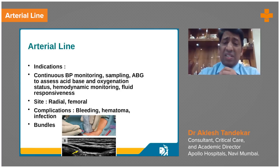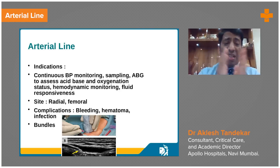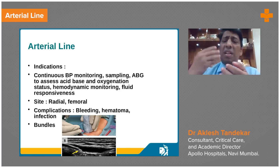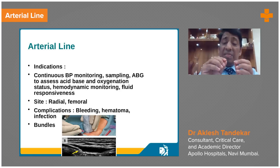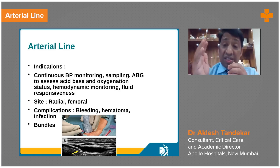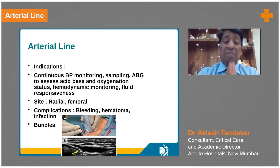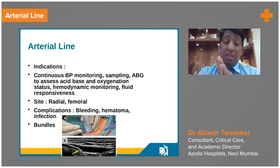The basic advantage of putting an arterial line is to have continuous BP monitoring. The arterial line not only gives you assessment of blood pressure but also helps with frequent sampling — ABG sampling — which will help guide oxygenation and ventilator parameters. TCO2, PO2, and acid-base status can also be assessed.